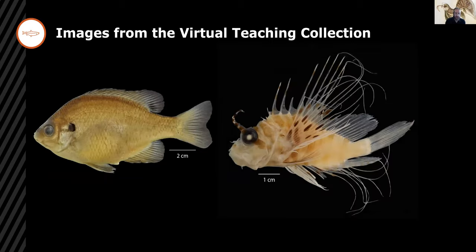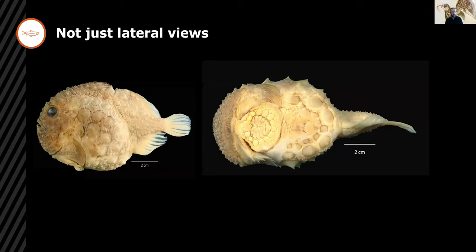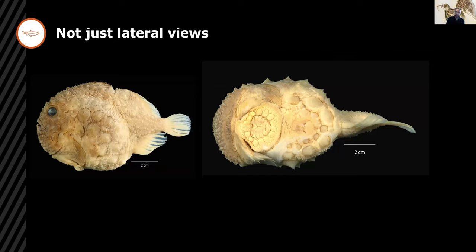In some cases we have included more than one view of a specimen, such as with this spiny lumpsucker, in which you need a ventral view to see the diagnostic fused pelvic fins. Multiple views come at a cost in time and efficiency, though—for the same amount of work we could have just photographed another specimen. We've also found that some information about body shape does get lost in translation to a series of 2D images, and that the presence of multiple views can provide an unintentional clue to a student seeking to identify them. So we investigated whether there was a way to bring 3D imaging techniques to the course.